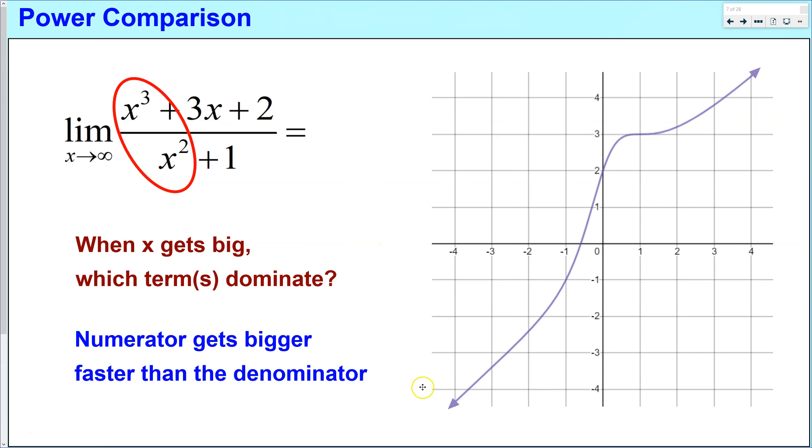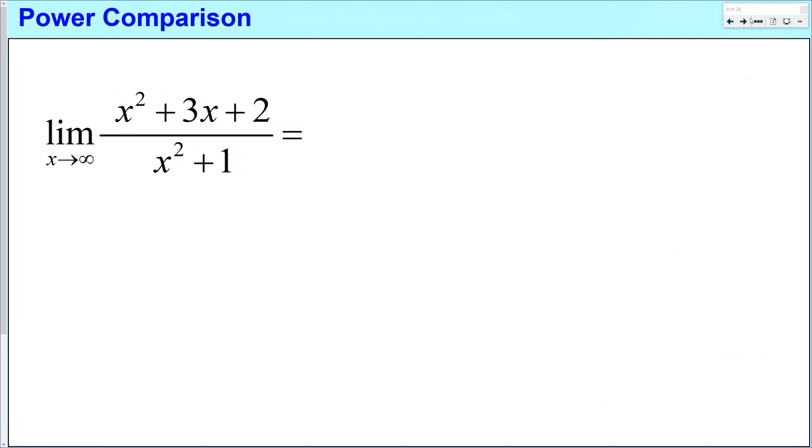And we can confirm that by looking at the graph as well. So never be afraid to go on to Desmos real quick and graph them if you have that ability. And we can see here that basically it's got a little lump in there, but otherwise it is a linear function with a slope of 1. Take a moment to jot this problem down.